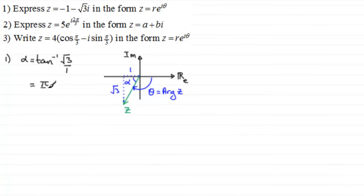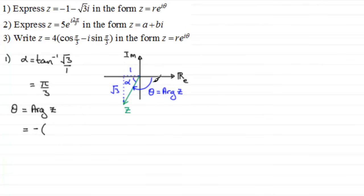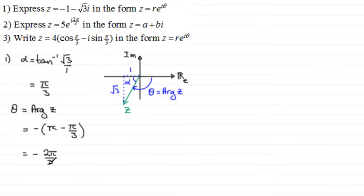60 degrees in radians is π/3. When working out theta — the argument of z — it's going to be a negative angle: pi minus alpha. Pi minus π/3 gives two-thirds pi, but with the minus out front, this is minus 2π/3. So we've got the theta part of our exponential form.